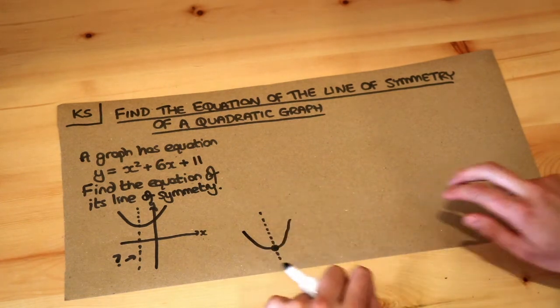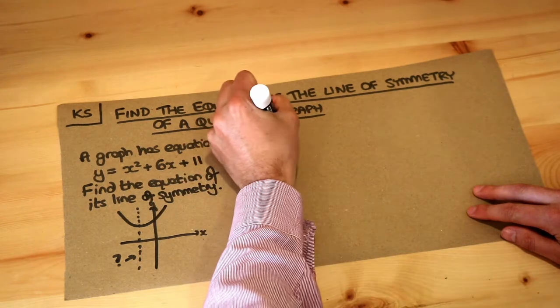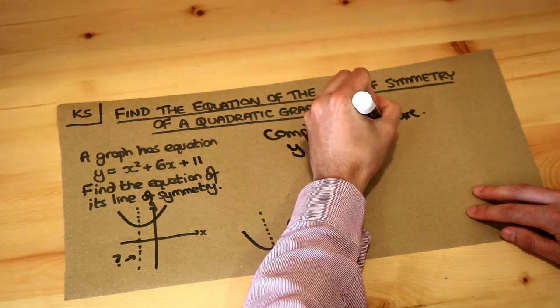Now in a previous video we saw how we could find the minimum point of a quadratic, we just need to complete the square. So if we do that on this equation,